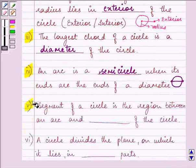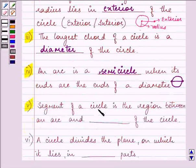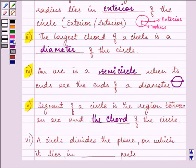Proceeding on with the fifth part, segment of a circle is the region between an arc and exactly the chord of the circle. Let's say this is a circle. So segment is the region between the arc,